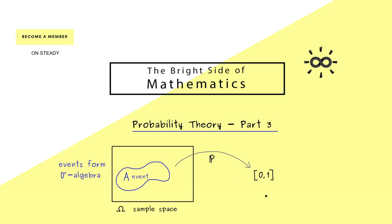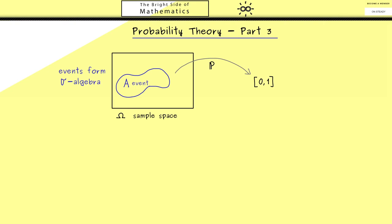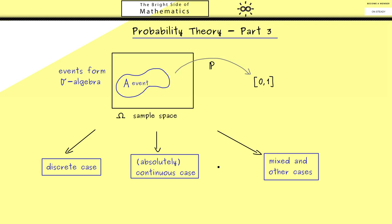However, in a lot of applications we find that two special cases are very important here. We distinguish between the discrete case and the continuous case. To be more precise, I would also speak of the absolutely continuous case.